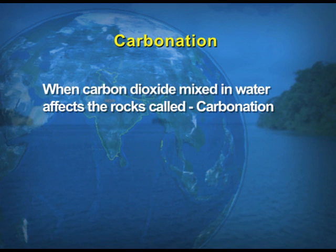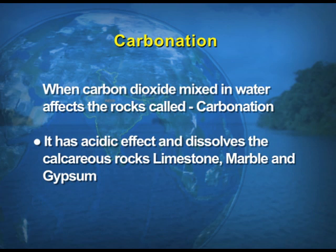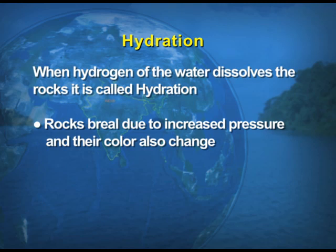Next is carbonation. This is the reaction of carbon dioxide with water. When carbon dioxide mixed with water affects the rocks, that is known as carbonation. It has an acidic effect and dissolves calcareous rocks — for example, limestone or gypsum. This action is also very active in underground water. When we talk about features formed by underground water, like stalactites and stalagmites, these are all results of carbonation. Stalactites and stalagmites will be discussed when we take up the landforms chapter.